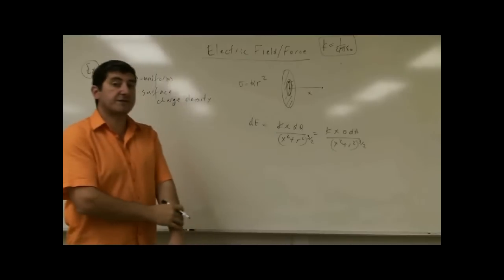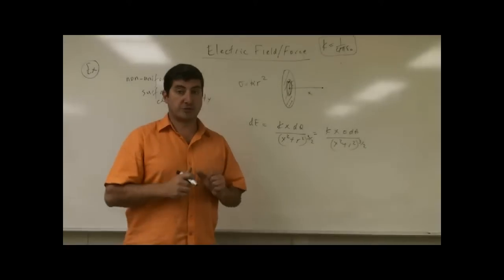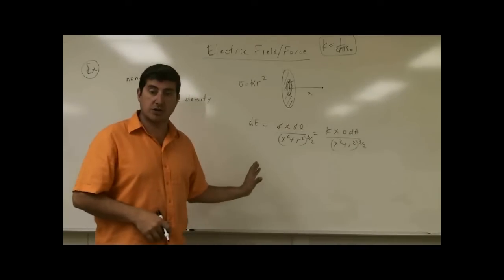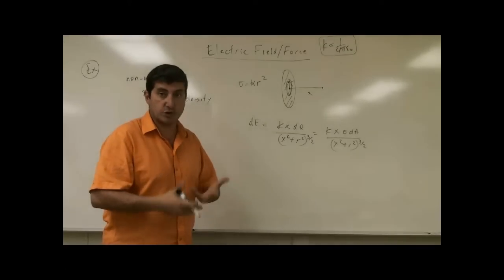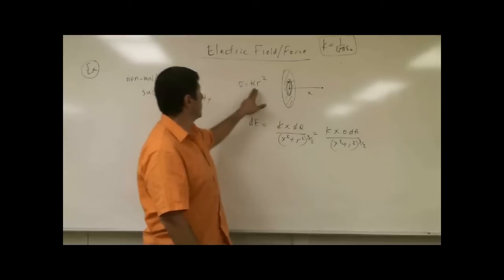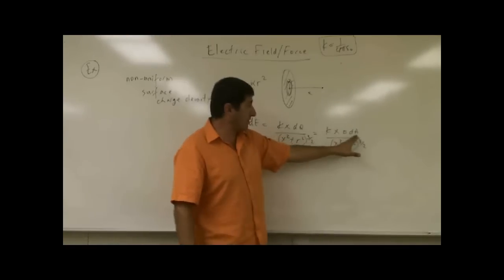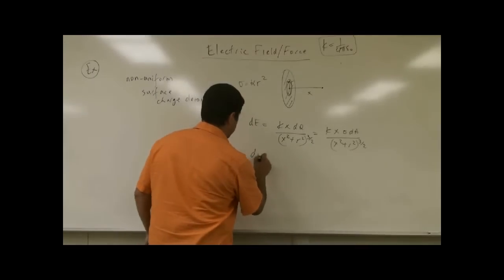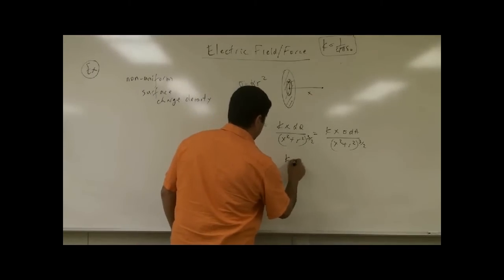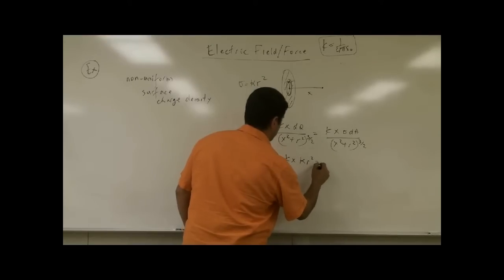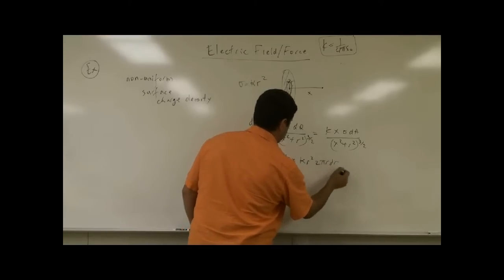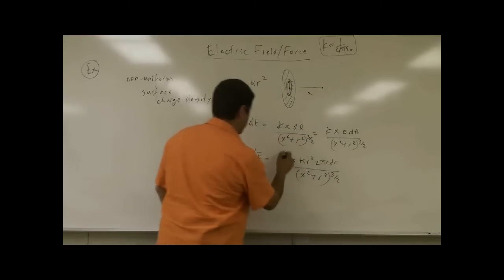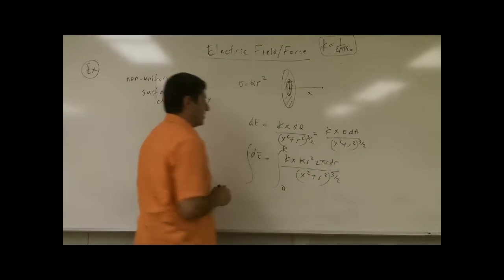This is where it differs from the case of uniform surface charge density. In the uniform case, I can pull sigma out of the integral since it's constant. In our case, we have to put sigma as kappa r squared, and also put dA as 2 pi r dr. So the overall integrand is kx times kappa r squared times 2 pi r dr, divided by (x squared plus r squared) to the three halves power, integrated from zero to the radius of the disk.